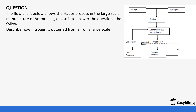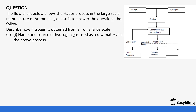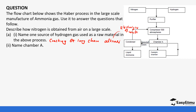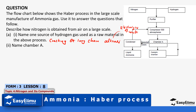Name one source of hydrogen used as a raw material in the above process. We say there is the cracking of long chain alkanes. There is also another process — electrolysis of water — which also produces hydrogen. Name chamber A: before the catalytic chamber is the heat exchanger.